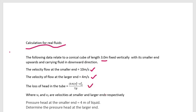Where v1 and v2 are velocities at smaller and larger ends respectively. Pressure head at the smaller end is equal to 4 meters of the liquid. Determine the pressure head at the larger end.